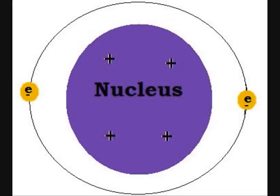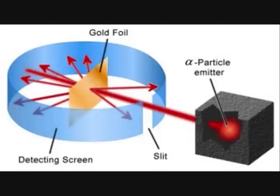This model of the atom, known as the Rutherford model, was created after a famous physicist called Ernest Rutherford did an experiment. In the experiment, he fired alpha particles, which are fast-moving helium nuclei, at some gold foil.